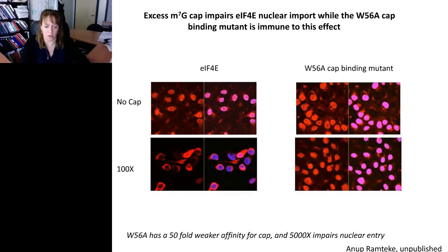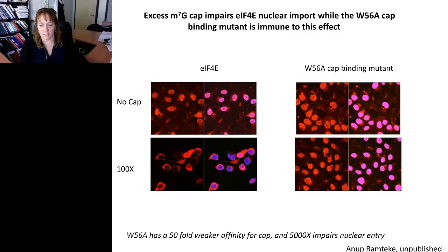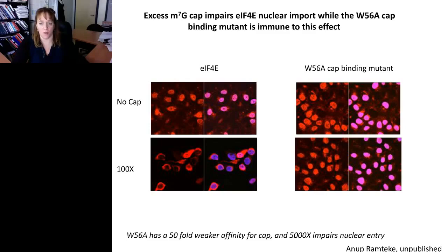In our nuclear import assays, clearly in the absence of cap you have happy nuclear import with importin-8, whereas if you add an excess of cap, import is disrupted. Taking a cap-binding mutant of 4E, W56A, interestingly you do not require cap-binding to enter the nucleus — it enters the nucleus just as readily as wild-type 4E. Since it doesn't bind the cap, the addition of cap has no effect and it still enters the nucleus in its cap-free state. Excess cap impairs 4E nuclear import while the W56A cap-binding mutant is immune to this effect.